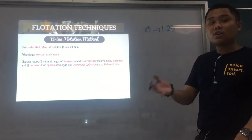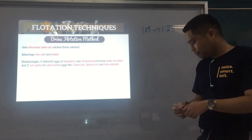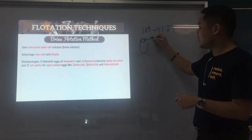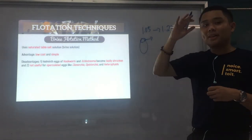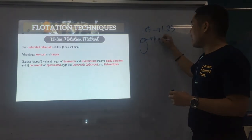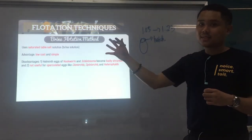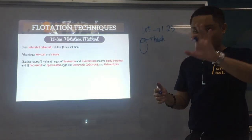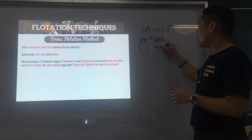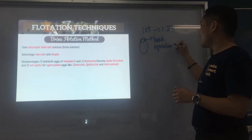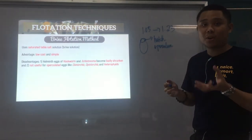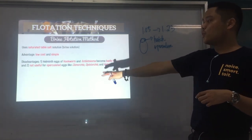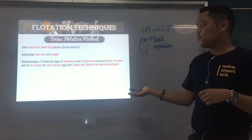It's also not useful for operculated eggs. When you say operculated, the egg has an operculum — it looks like a hatch or door that opens when the larva inside the egg goes out. This is usually seen in trematode eggs. So brine flotation is not useful for operculated eggs like Clonorchis, Opisthorchis, and Heterophyes.